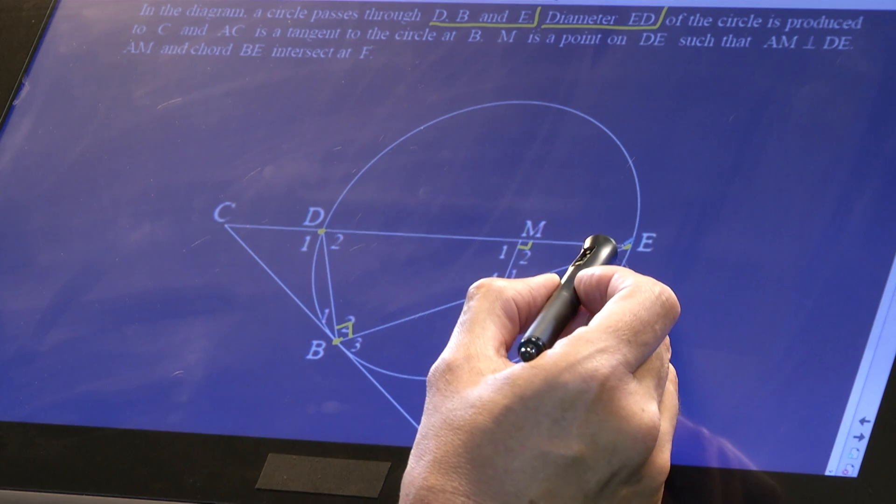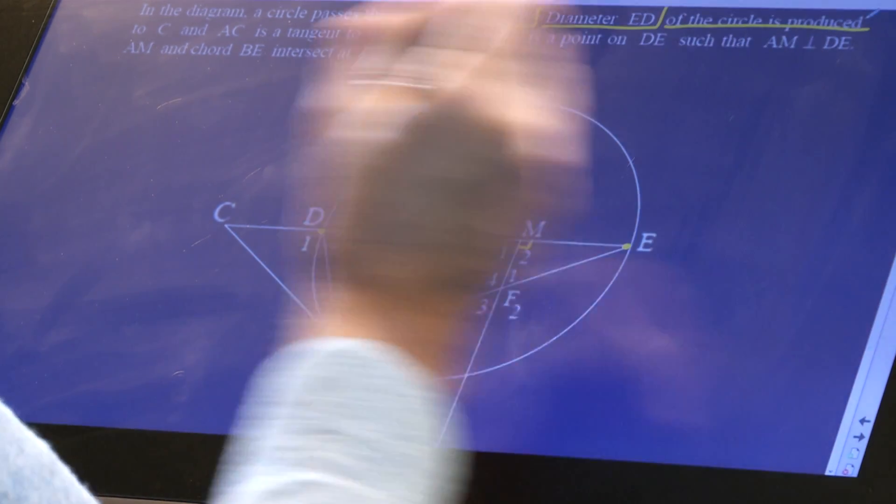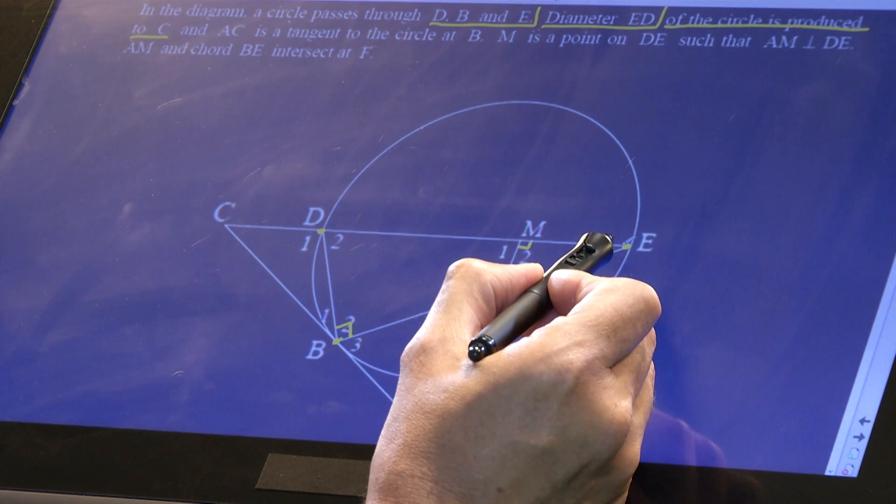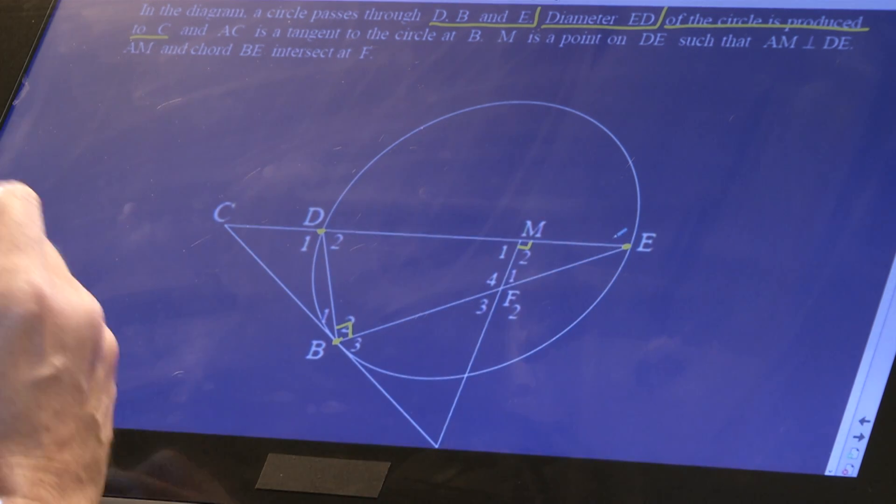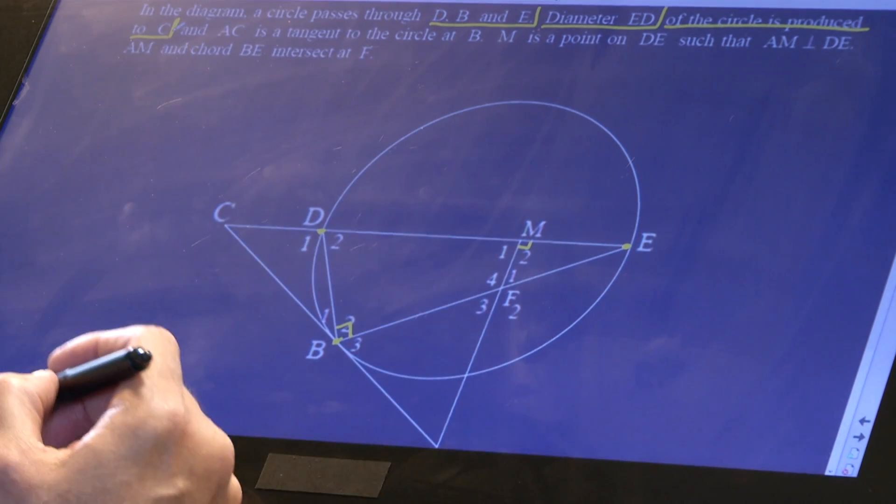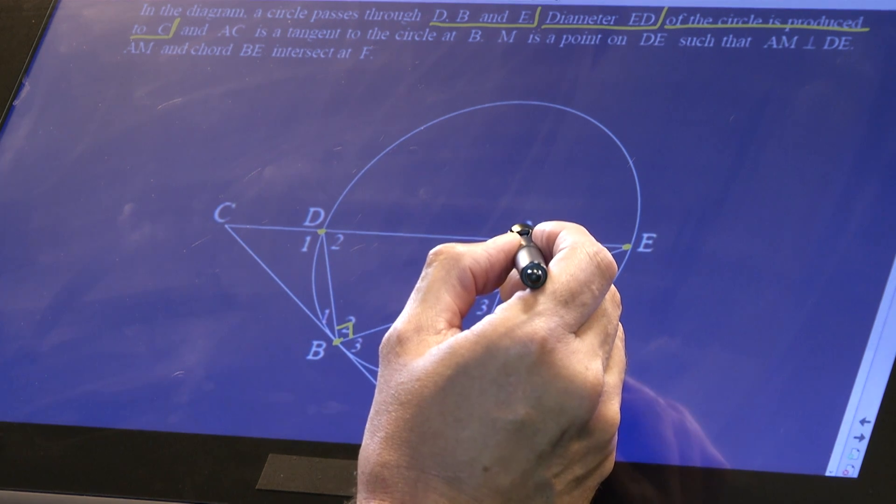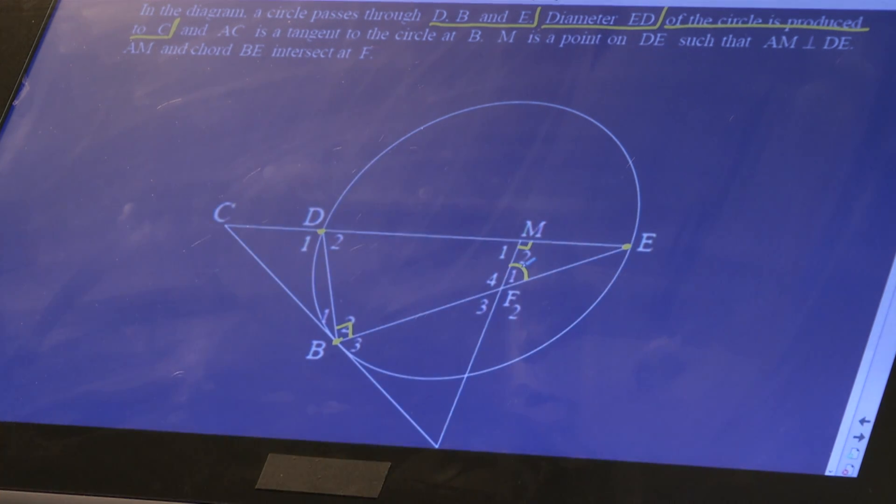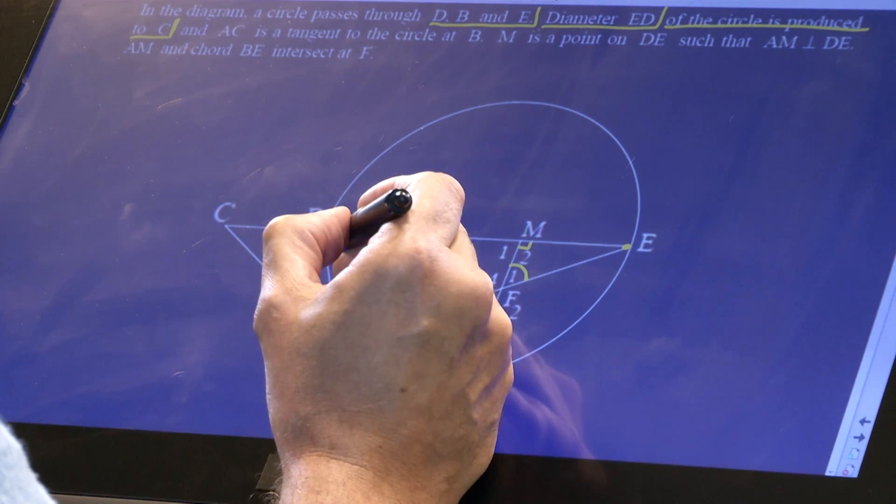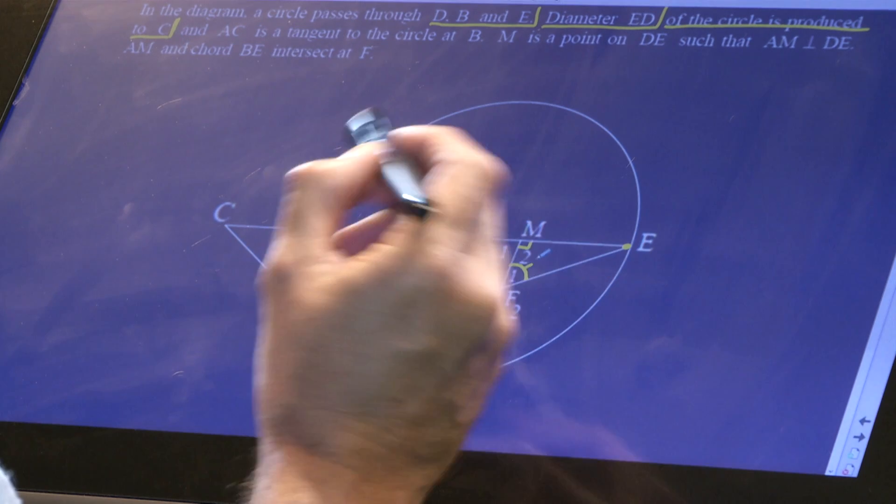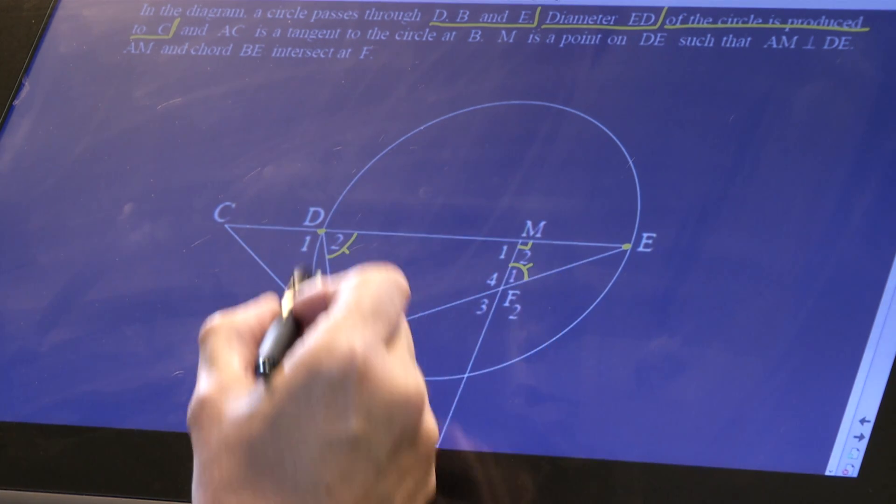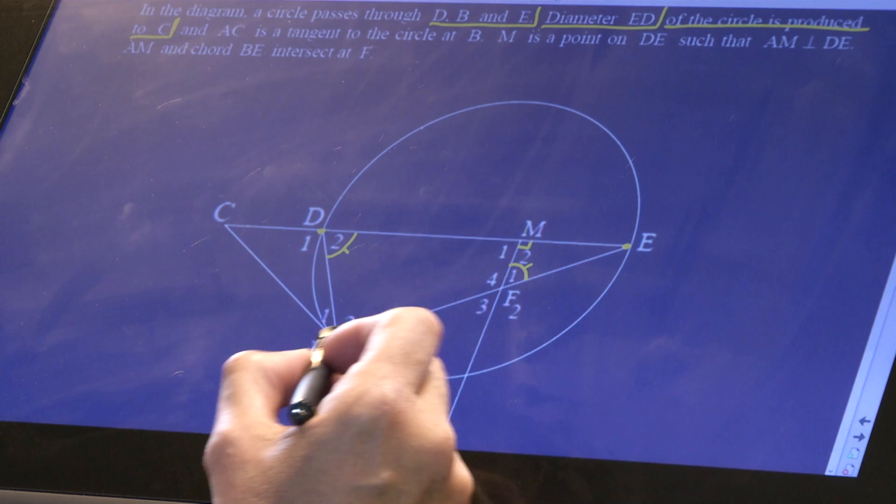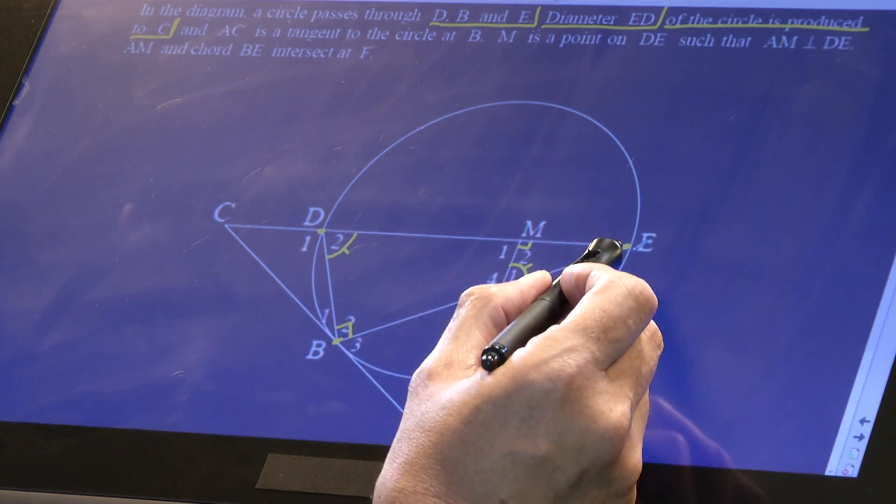With this as a diameter, it is produced to C. Look at that, the diameter is produced so this is straight. AC is a tangent to the circle, so we can now immediately claim this as a cyclic quad, which will make this angle at F1 equal to the angle at D2, because this is also an exterior angle to that cyclic quad.